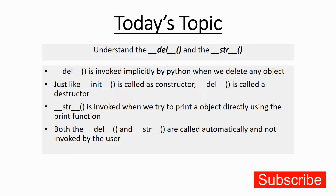Hello everyone and welcome back to the series Python Unleashed. My name is Ajay and today's topic is two more built-in methods: the __del__ method and the __str__ method. Both start and end with double underscores. The __del__ method gets invoked when we try to delete an object — for example, if there is an object 'a' and you delete it using a del statement like 'del a', this method will automatically get invoked.